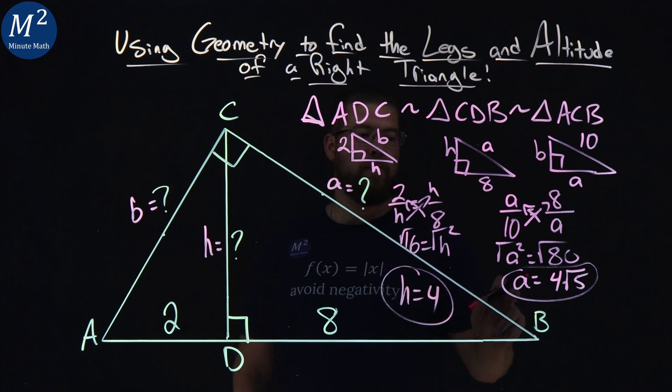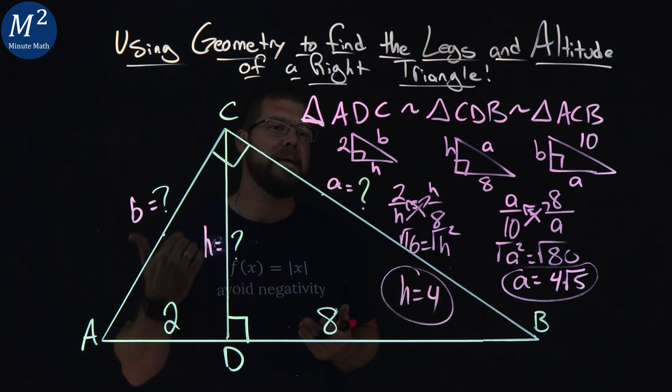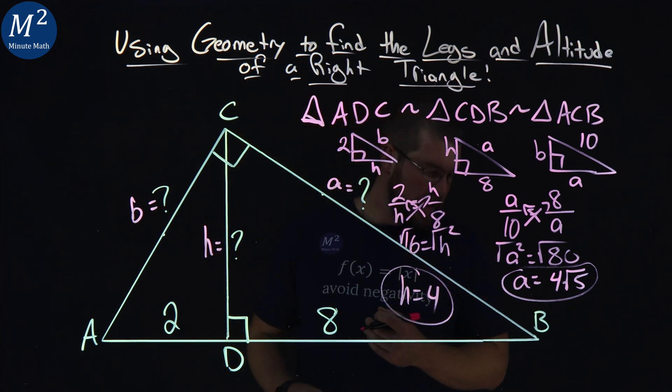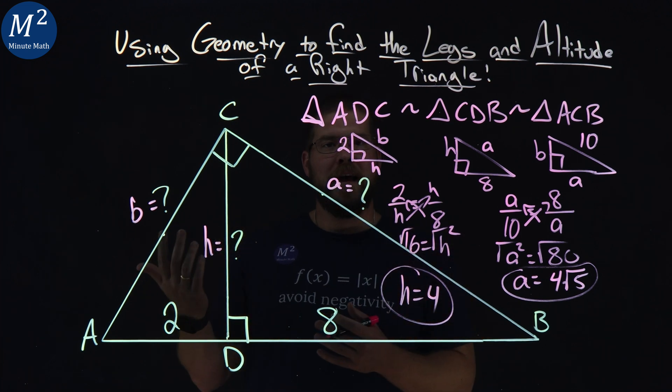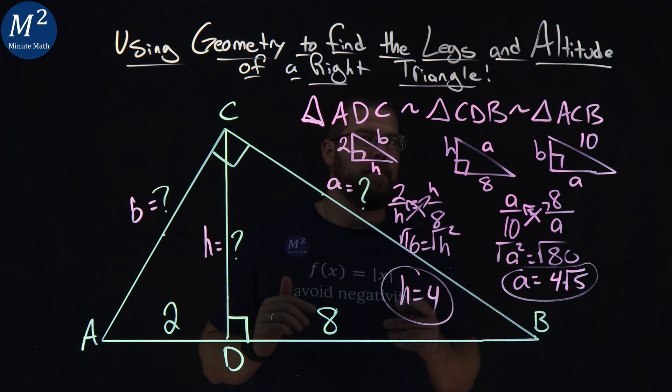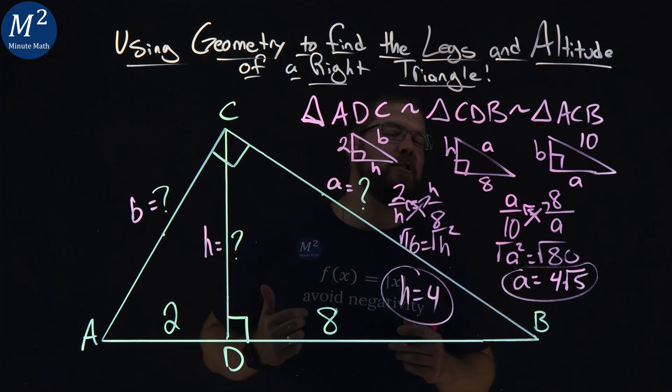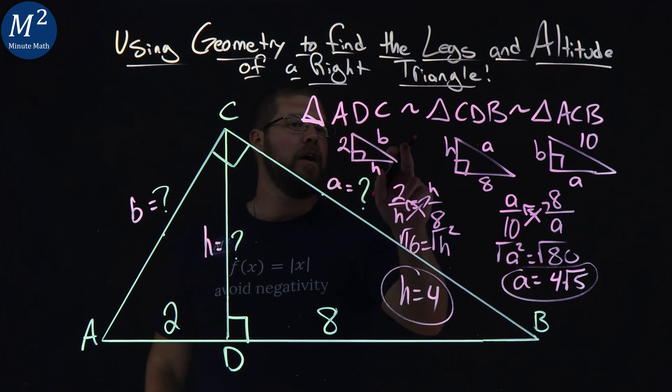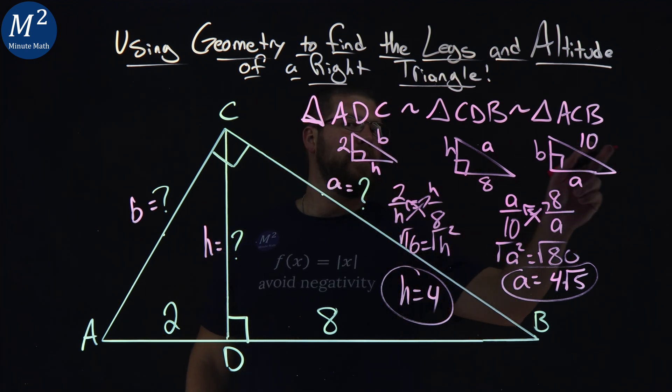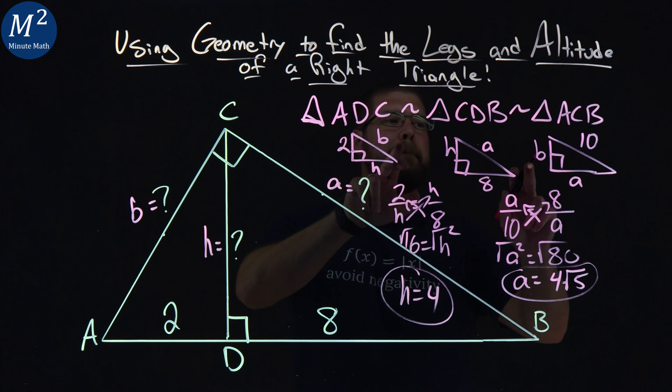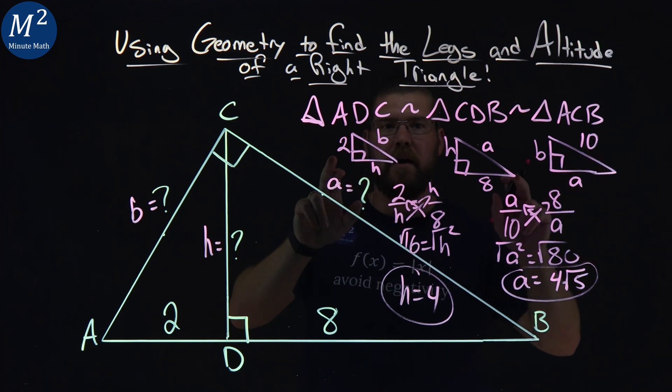So we have the height here. We have one of the legs. We need to get b by itself here. And there's a few ways. Obviously we can do that now by theorem, but I think we can do that with a ratio again, because that's so much more fun. The first and last one right here, b, b, 10. We can do that, right? They are similar triangles.